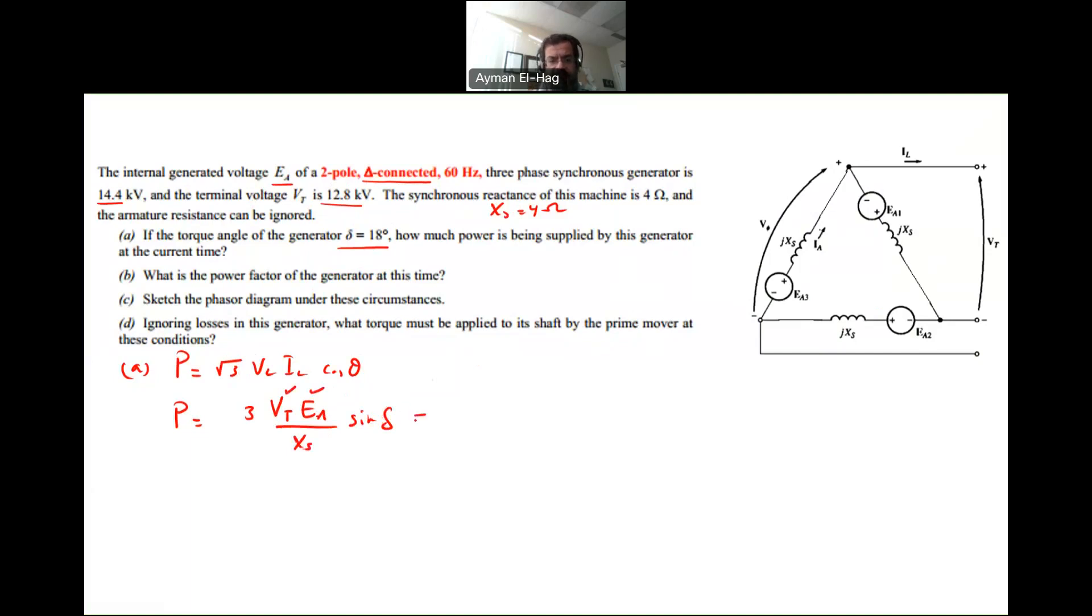So this is equal to 3. Now, as I said, because this is a delta, the Vt and EA are both the line and the phase voltage. But this formula here, Vt and EA is supposed to be the phase voltage.